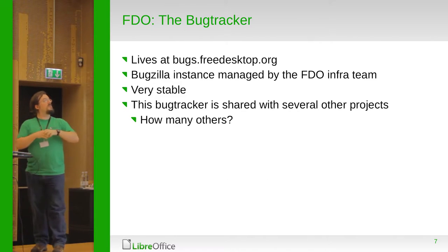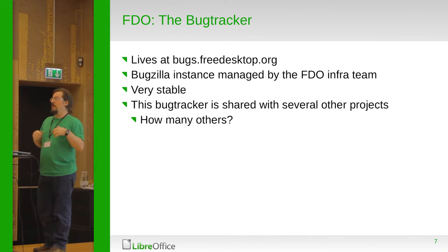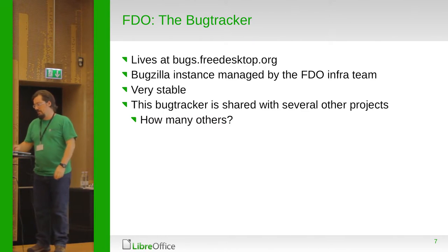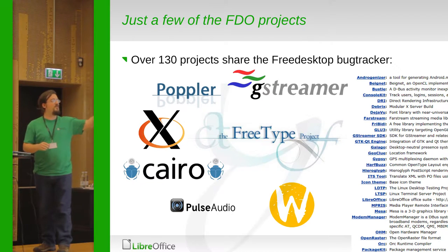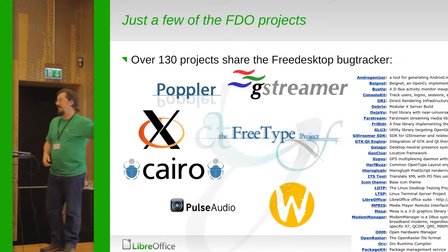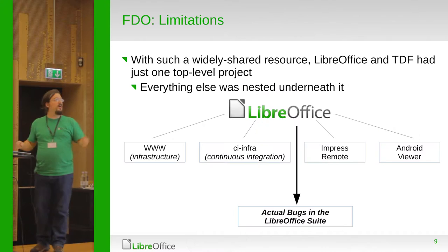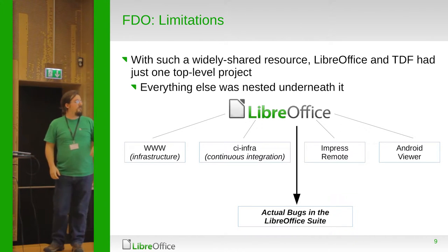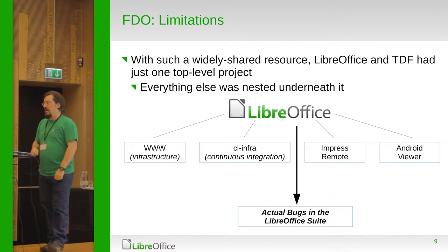freedesktop still exists, the bug tracker still exists — it's very stable and continues along. However, there were several issues and reasons why we decided to migrate away from freedesktop. We shared that Bugzilla instance with about 130 projects. We had just one slice — LibreOffice was one project out of 130 — and we lumped a lot of content into what is one product slot in Bugzilla. This limited us a lot.